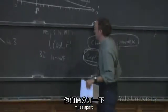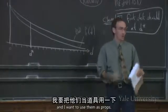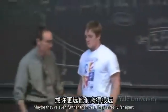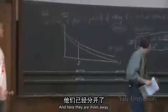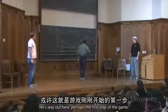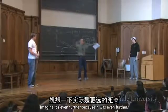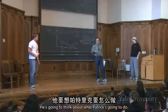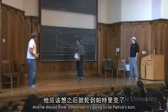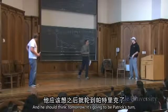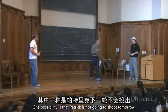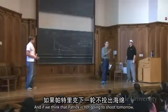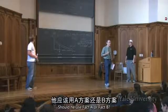Let's start this analysis way out here — they're miles apart. I want to use these props, so I've got these guys. Maybe they're even further than this; they're really far apart. Let's say it's Shebby's turn, way out here at the first step of the game. Let's think through what should be going on in Shebby's head. He's going to think about what Patrick's going to do. Tomorrow it's going to be Patrick's turn, and there are two possibilities: one possibility is that Patrick is not going to shoot tomorrow. If we think Patrick is not going to shoot tomorrow, which fact should Shebby use?